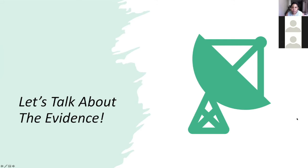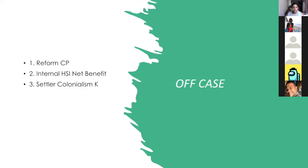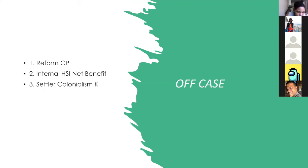Now let's talk about evidence. There are off-case positions and then there's the case neg. Looking at the packet you see the off-case: the counter plan, the critique, and the HSI stuff. Then you see case neg. Right now I'm talking about the off-case stuff. We have the reform counter plan, the internal HSI net benefit, and we have the settler colonialism critique.